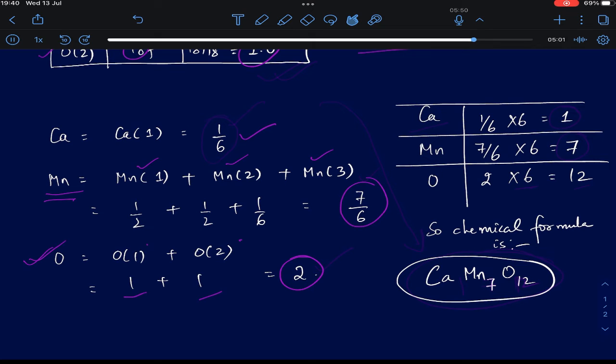Now let's regenerate the chemical formula. The numbers are in the form of fractions. To make them whole numbers, you have to multiply a factor of 6 to all three of them. For the chemical occupancy of calcium, you multiply 1/6 into 6, that gives you 1. For Mn, you multiply 7/6 into 6, that gives you 7. For oxygen, you multiply 2 into 6, that gives you 12. Now you can rewrite the formula as Ca1Mn7O12, which is nothing but the chemical formula with which we started.